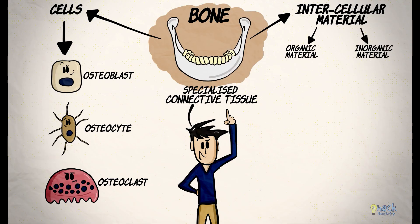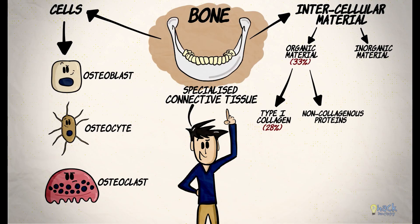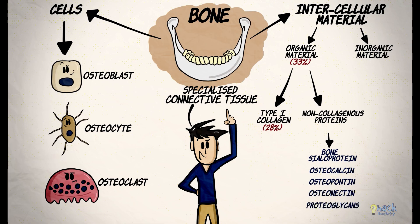By dry weight, bone comprises 33% organic matrix, with 28% representing type 1 collagen and non-collagenous proteins like bone sialoprotein, osteocalcin, osteopontin, osteonectin and proteoglycans making up the rest of the 5%. The organic matrix is mineralized by hydroxyapatite, which makes up the inorganic material and comprises the remaining 67% of bone by dry weight.